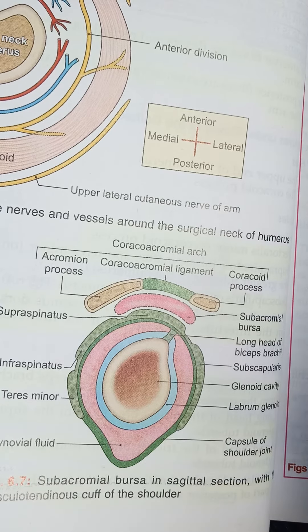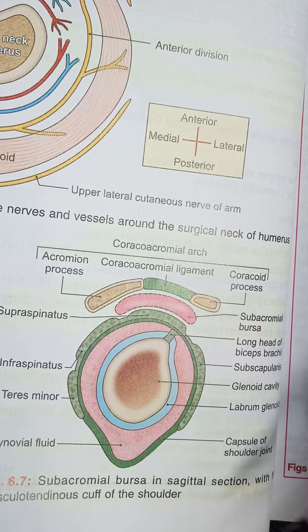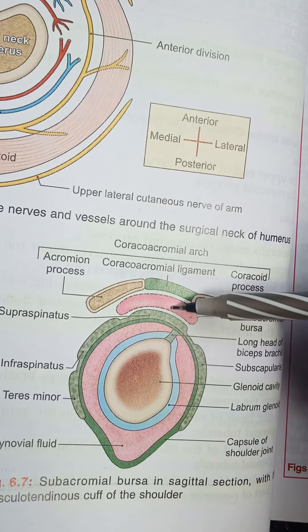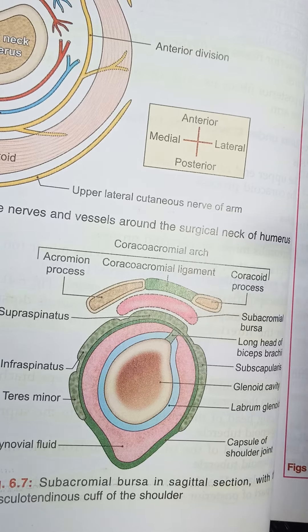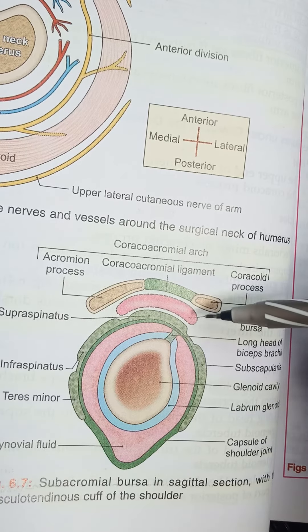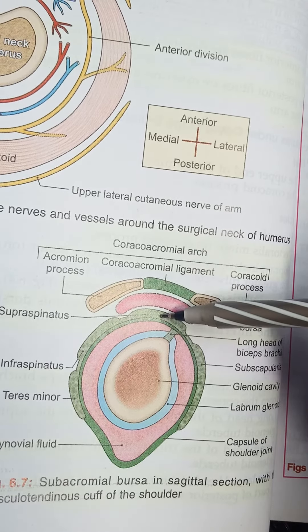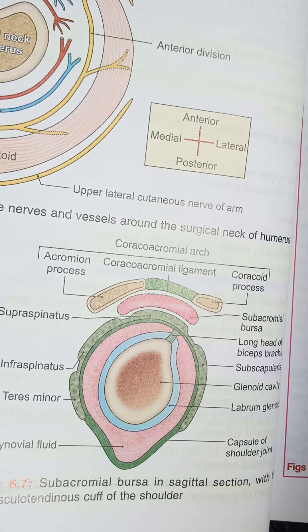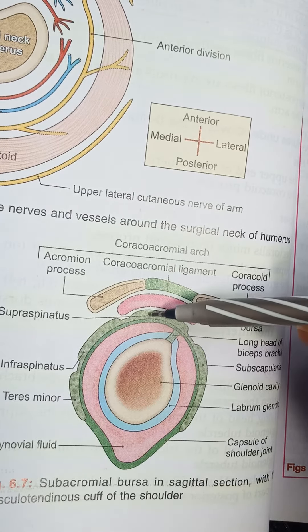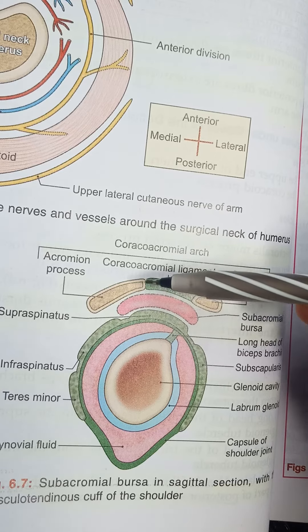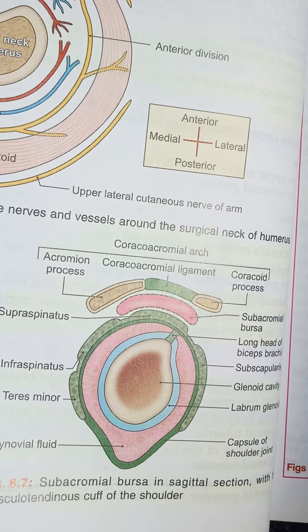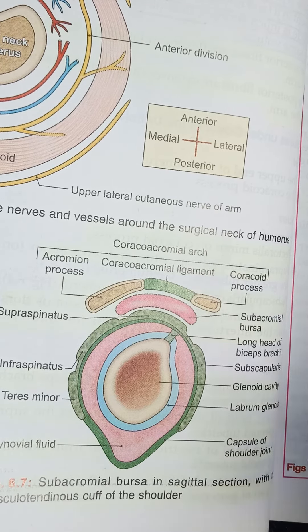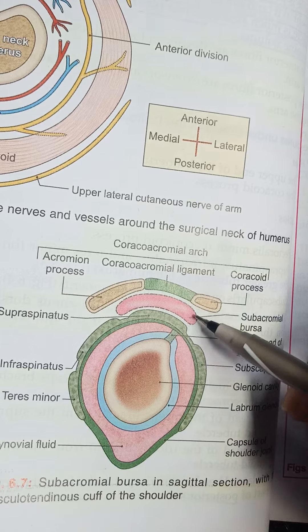This is the sagittal section passing through the subacromial bursa. The subacromial bursa is located below the coracoacromial arch and the deltoid muscle. Below the bursa we have the tendon of supraspinatus and the greater tubercle of the humerus. This protects the supraspinatus from friction against the acromion process, and during overhead abduction the greater tubercle moves under the acromion process, facilitated by the presence of this bursa.